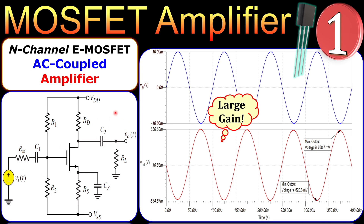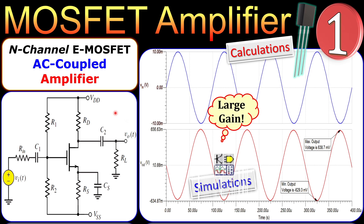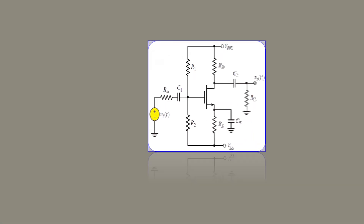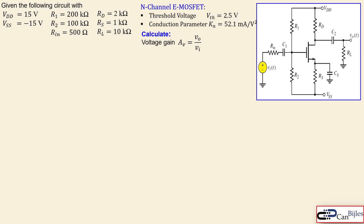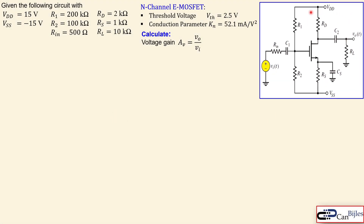We will work out the calculations step by step and verify them in SPICE simulations. Looking at our circuit, we have the full resistor biasing network: R1, R2, RD, and RS, with the values shown.